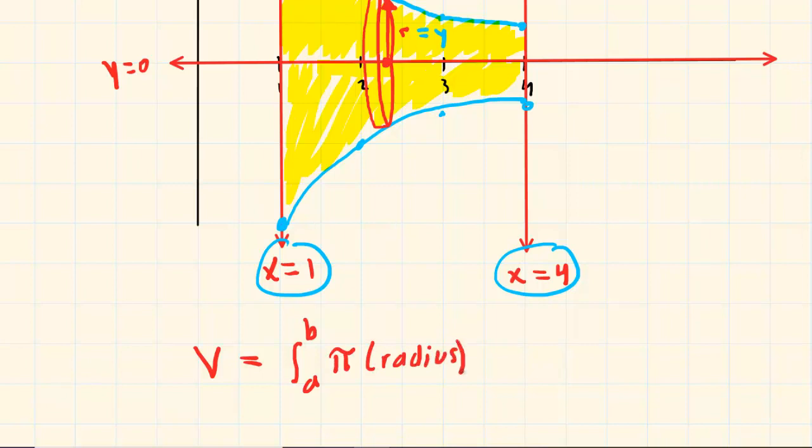So we would have the volume is equal to an integral from a to b of pi times a radius squared dx. We've already noted that the radius was equal to y, so we can actually come in here and replace this with y. And then a and b are simply the lower x limit of our region and the upper x limit of our region, so we can actually plug one and four in for the a and the b.